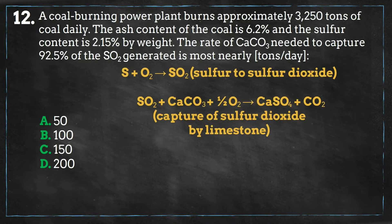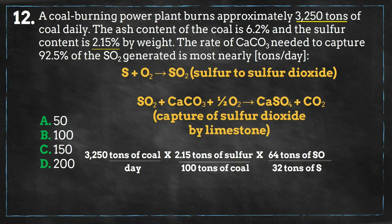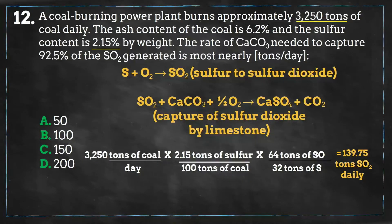Having these balanced equations will now help us solve this problem. We have a coal usage rate of 3,250 tons daily, and only 2.15% of this usage will consist of sulfur. Looking at our first equation, one mole of sulfur, which weighs 32 grams, will create one mole of sulfur dioxide, which weighs 64 grams. Using this information and extrapolating from grams to tons, we can calculate that 139.75 tons of sulfur dioxide will be created daily from burning this coal.